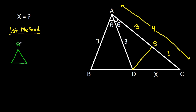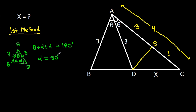In triangle ABD, AB is equal to AD, that is 3, so these two angles will be equal — suppose alpha. And this angle is theta, so theta minus alpha minus alpha equals 180 degrees, so alpha equals 90 degrees minus theta over 2. So this angle will be 90 degrees minus theta over 2.